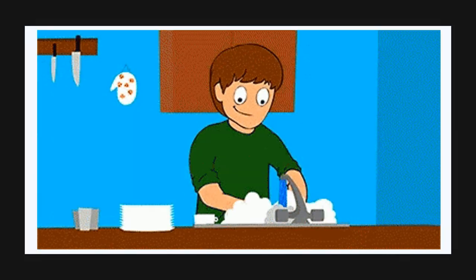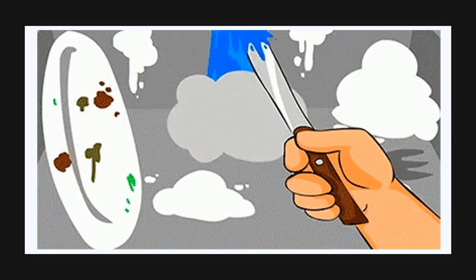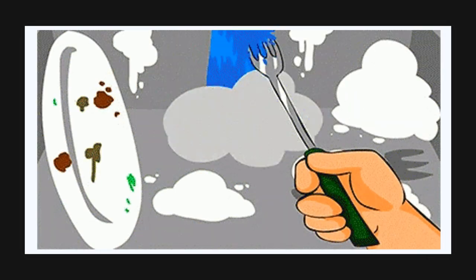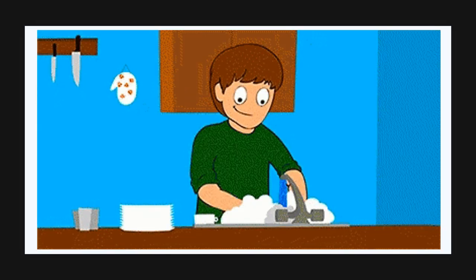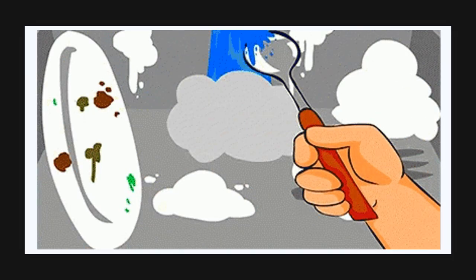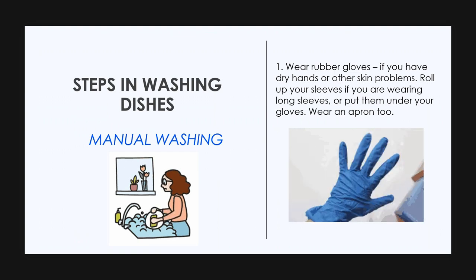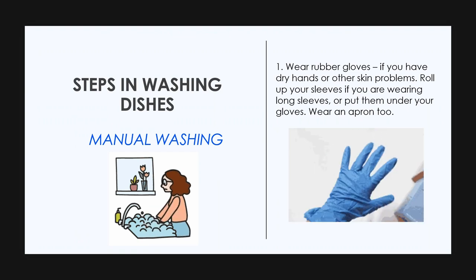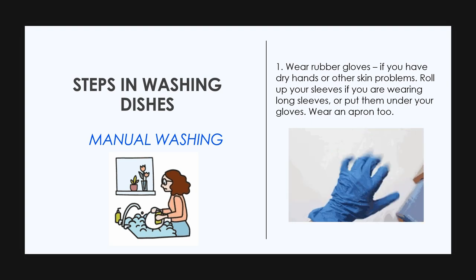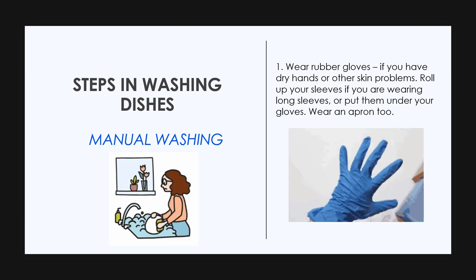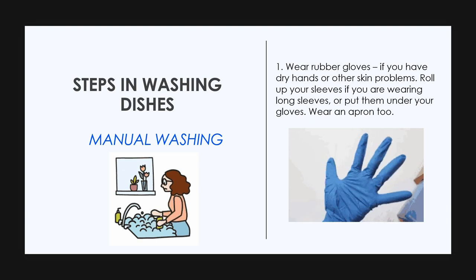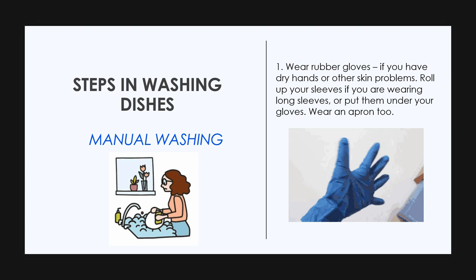Now let us proceed to warewashing. Warewashing is the process of washing and sanitizing dishes, glassware, flatware, pots and pans either manually or mechanically. There are two types of warewashing. The first is manual washing, which uses a three-compartment sink and is used primarily for pots and pans. It may also be used for dishes and flatware in smaller operations.